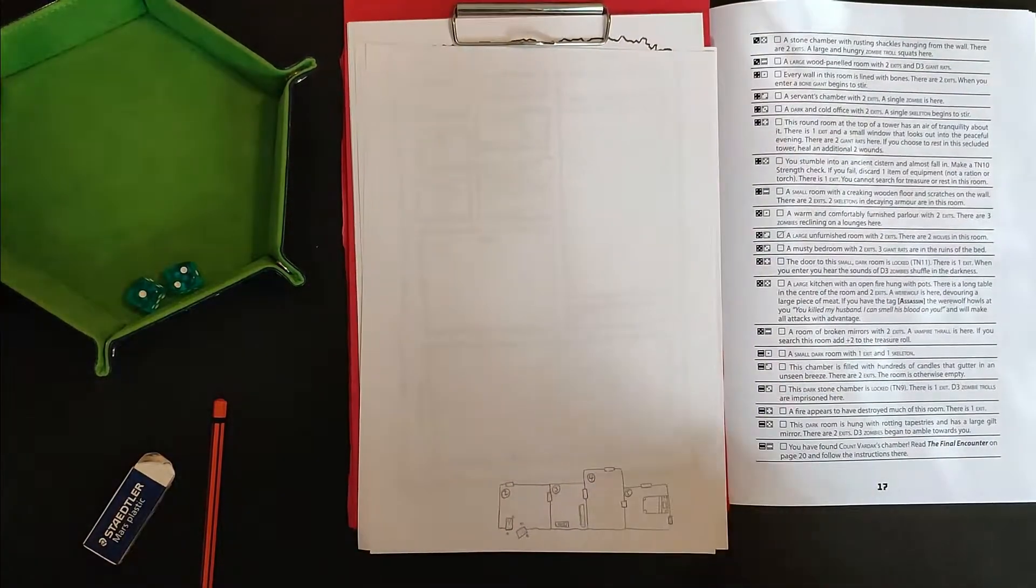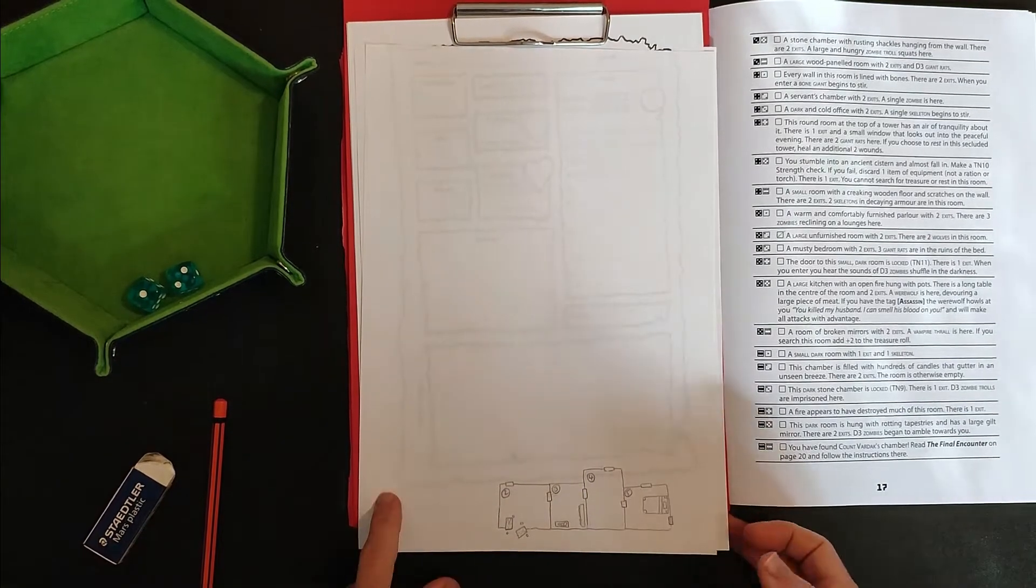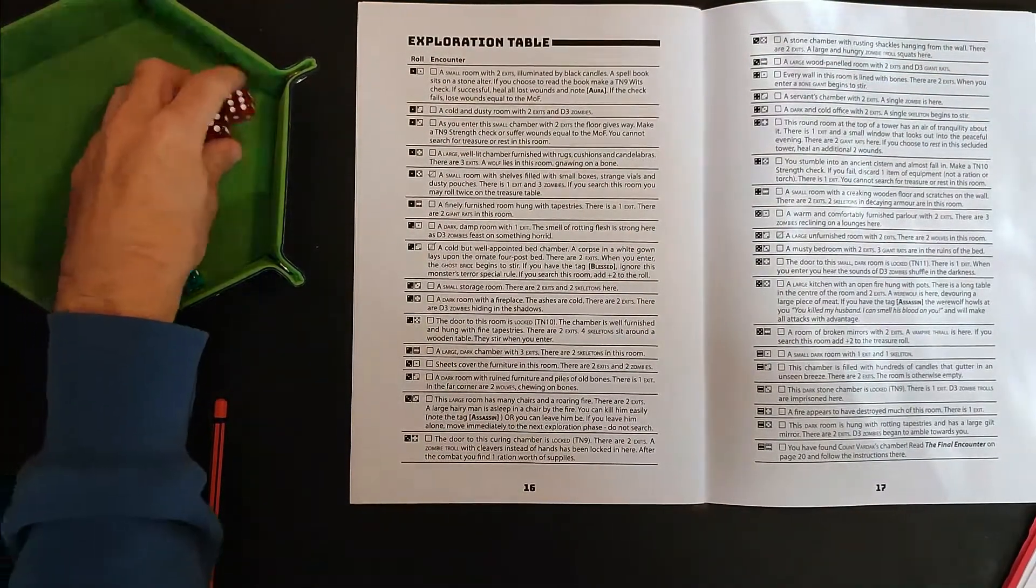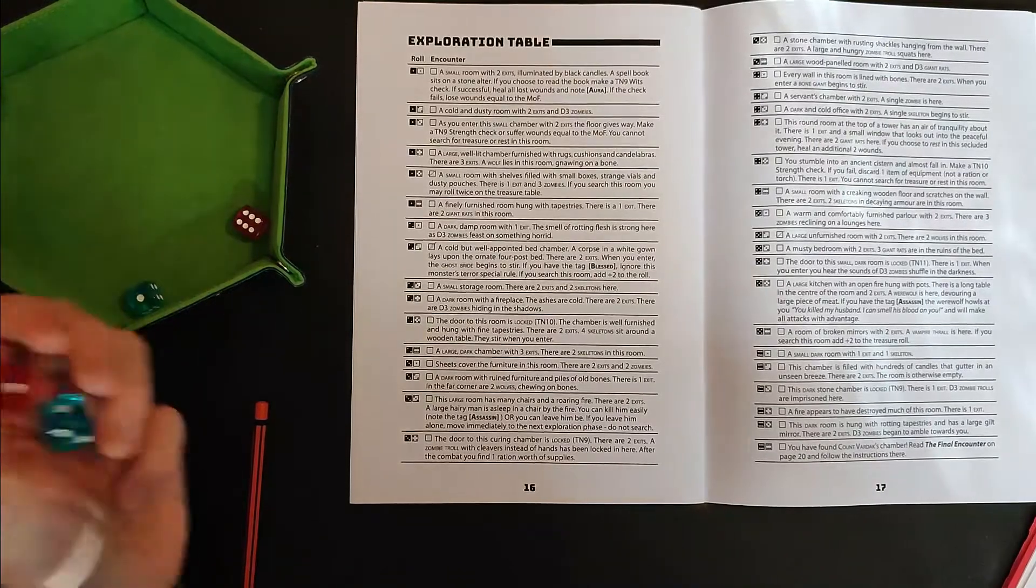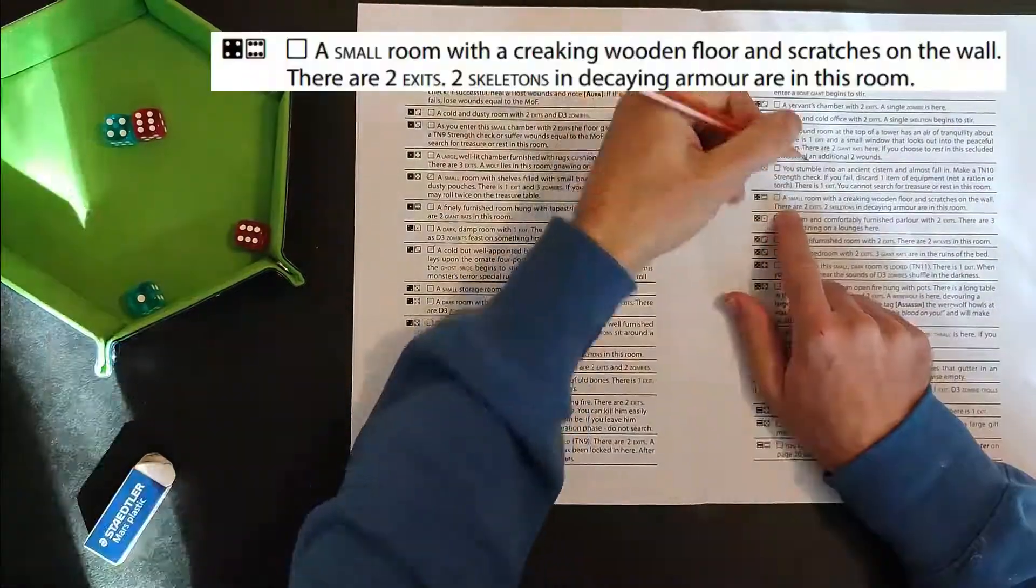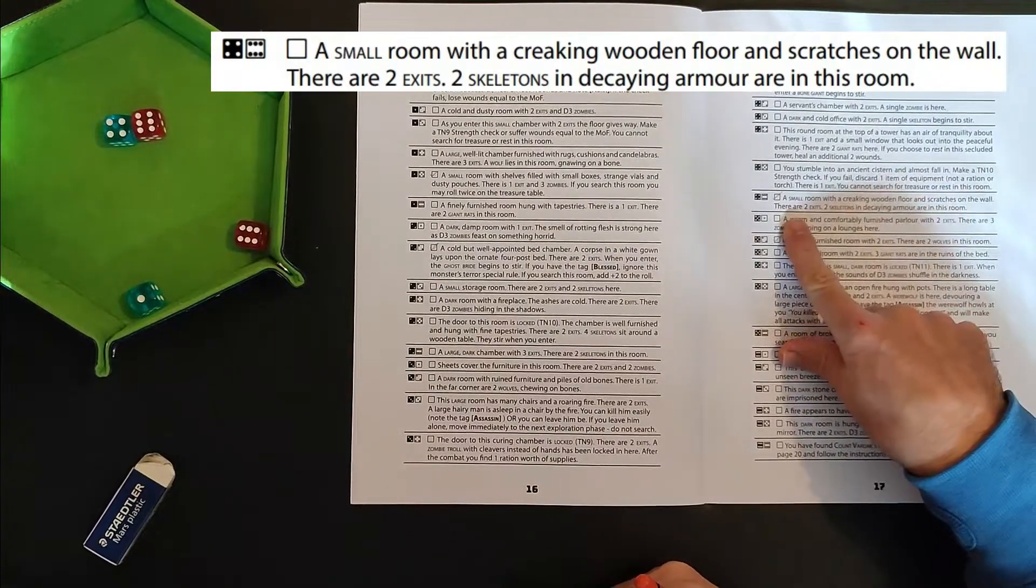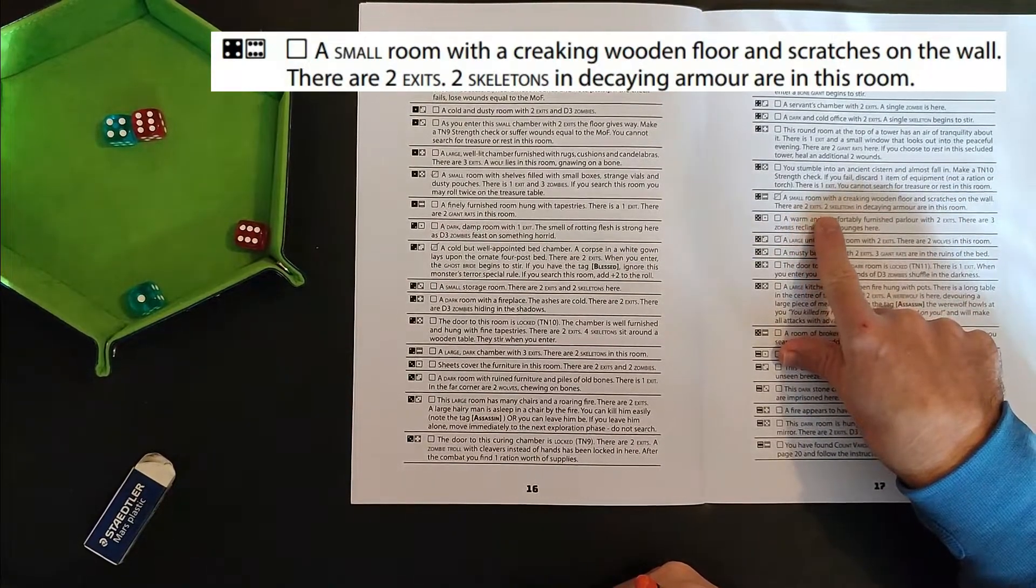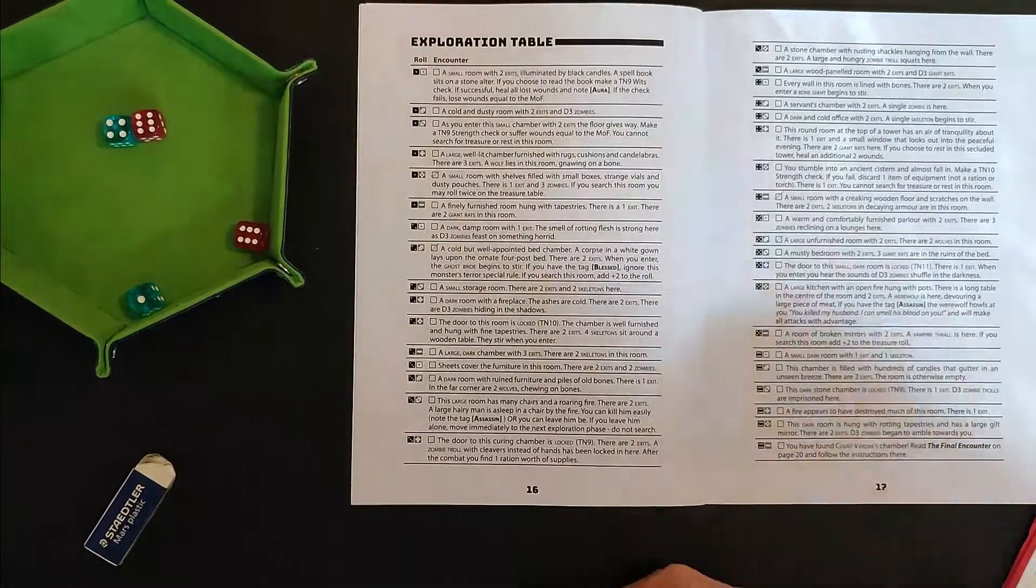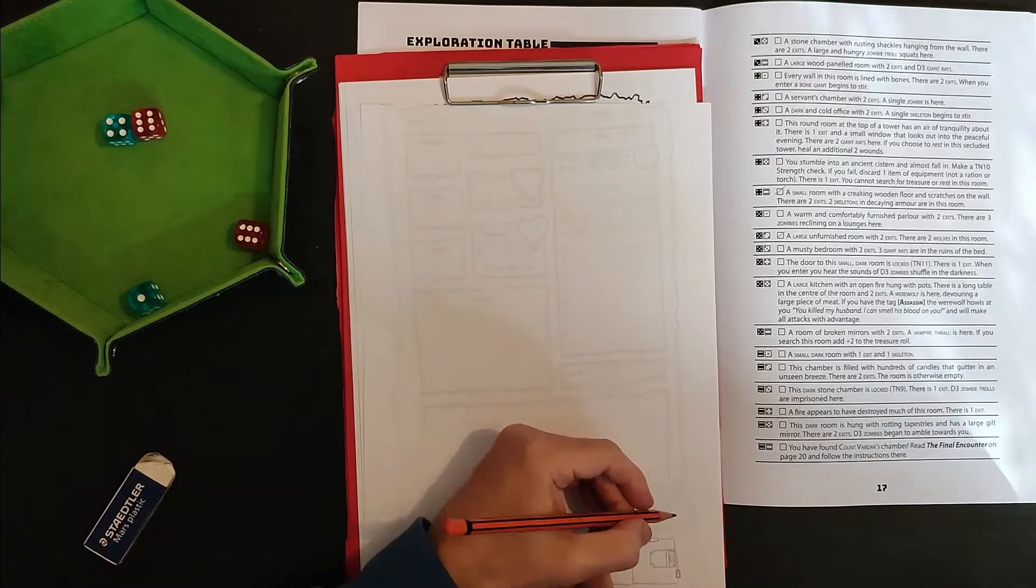Right. So I think I'm going to go, am I going to just keep going this way? Nah, we'll leave that door. I'm going to go up in this direction. See what we've got beyond there. Oh, no, I'll re-roll because I usually roll one of each color. 46. A small room with a creaking wooden floor and scratches on the wall. There are two exits. Two skeletons in decaying armor are in this room. Okay. Right.